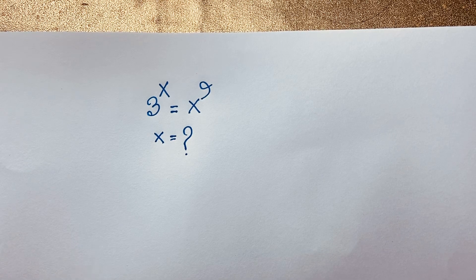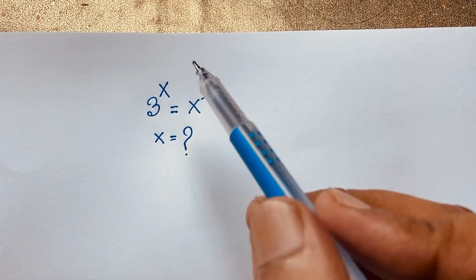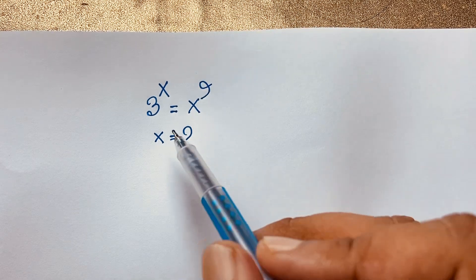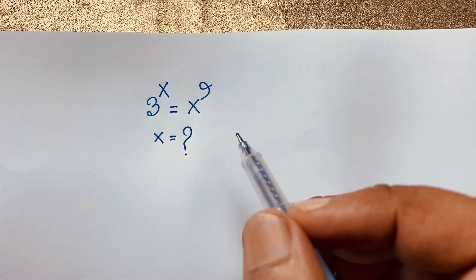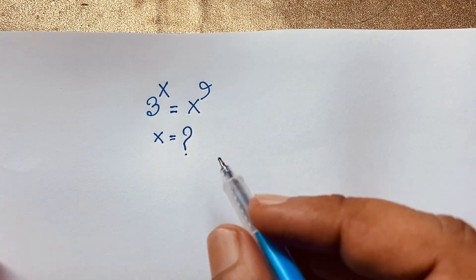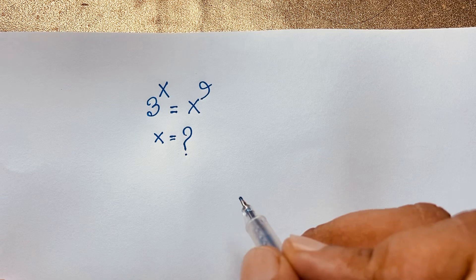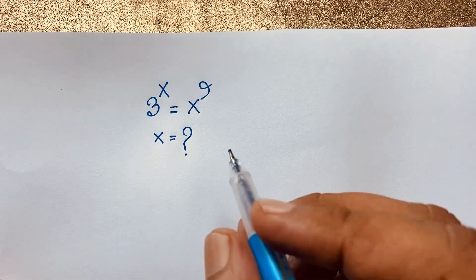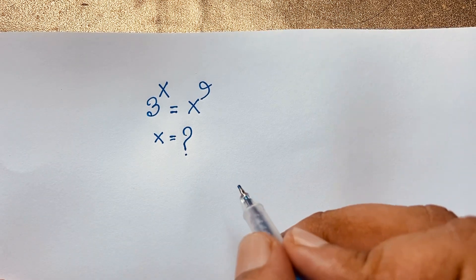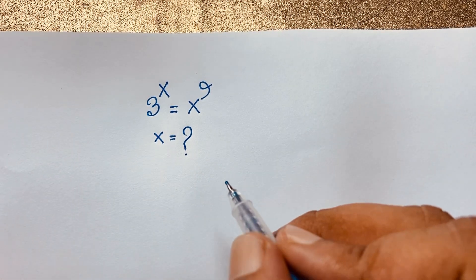Hello everyone, welcome to Russia's Classroom. Today we are solving an interesting viral maths Olympiad question. This question is: 3 to the power x is equal to x to the power 9. x is equal to what? How to solve this interesting maths Olympiad question?